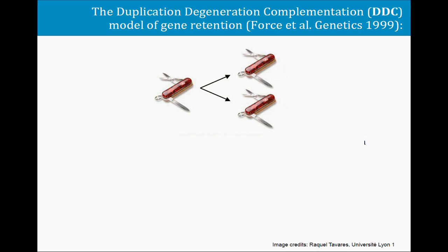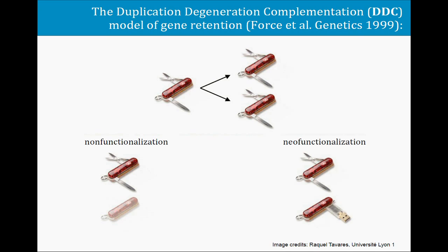If there's a duplication creating two copies of this gene, what's going to happen most of the time is one of the two copies will pick up a mutation that turns it into a pseudogene, and this copy will just be eliminated from the genome — and you're fine, because if you need the scissors or the knife, you still have this copy present in your genome. Maybe one copy will be extremely lucky and pick up a mutation allowing it to evolve a new function, in that case the USB flash drive function. If this new function is beneficial and increases fitness, then selection will operate to preserve both copies.